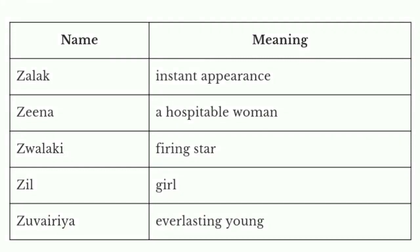Welcome to our channel. Today we are going to discuss Indian baby girl names starting with the letter Z. First name: Jalak, meaning instant appearance. Next name: Jina, meaning a hospitable woman. Next name: Jalaki.